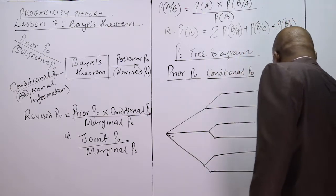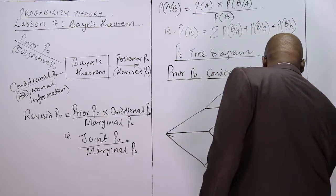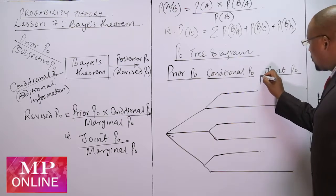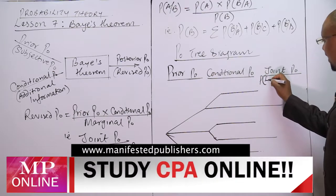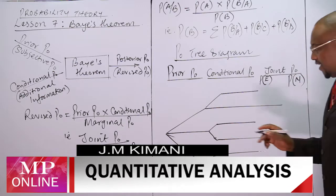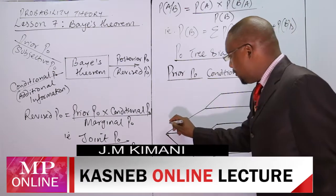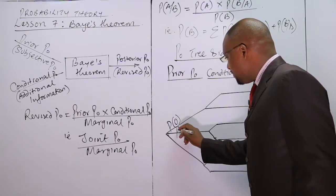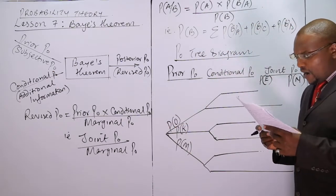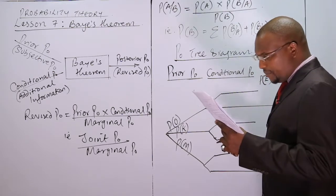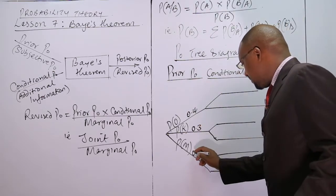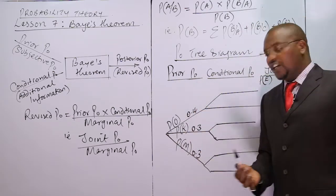The joint probabilities from this diagram allow us to categorize accounts after auditing into those with errors and those with no errors. The prior probability is the distribution of accounts: probability to Othiambo, probability to Koech, and probability to Moai. The probability of accounts assigned to Othiambo was 40%, so we write 0.4.